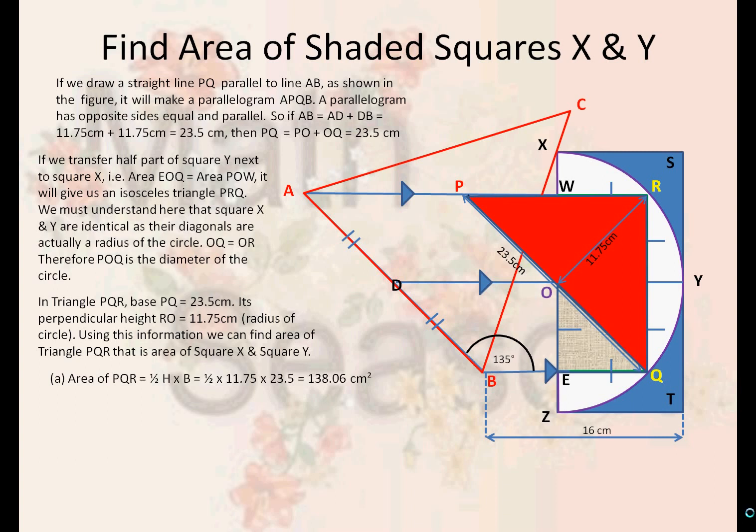Therefore, the answer to part A of the question for the area of PQR is equal to half height into breadth, which is the formula to find the area for a triangle. And if we solve that, we get an answer of 138.06 cm squared.